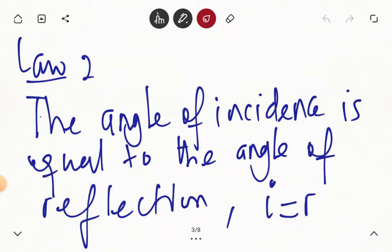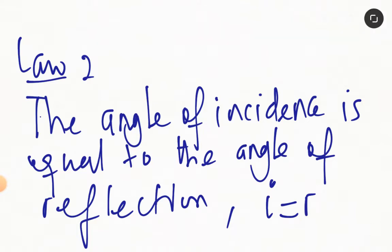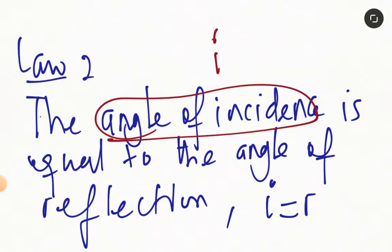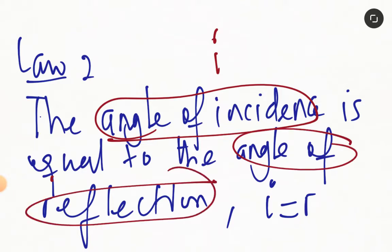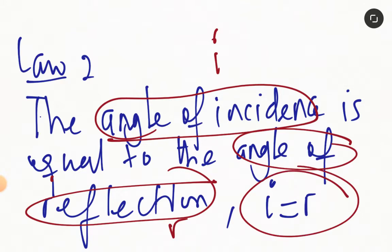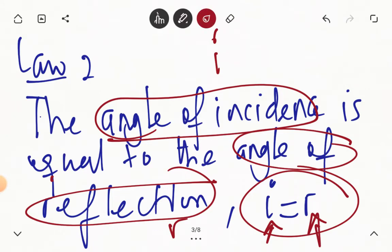Now Law 2 — what does Law 2 state? It says that the angle of incidence, which we call I, is equal to the angle of reflection, which we call R. So mathematically we have I equals R. The angle of incidence is equal to the angle of reflection. We will see that in a diagram.